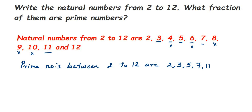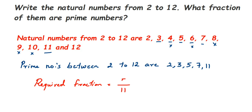Eleven is a prime number. Twelve is not a prime number because it goes in 1, 2, 6, and 12. Now let's count how many prime numbers we got — we got a total of 5 prime numbers. So the required fraction is 5 out of 11 natural numbers, which gives us 5 by 11.